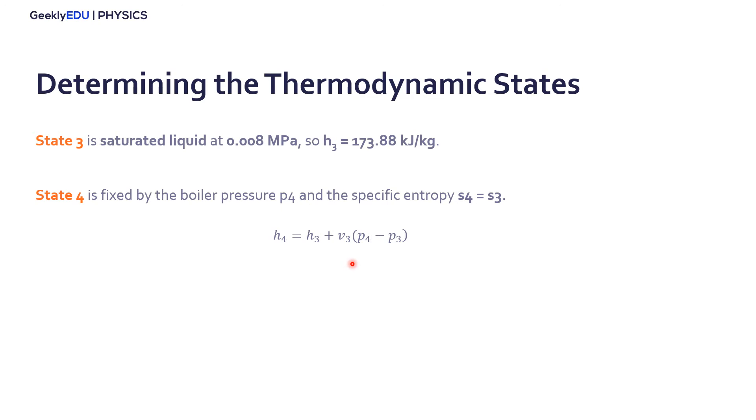Remember, for the pump, we can use the specific volume and difference in pressure. You can watch our previous video and take a look into this specific formula here. So from this, we have these values from the thermodynamic tables, the specific volume, and we can find the state four, the enthalpy for state four. Now we have all these states, the thermodynamic states determined, and we can move on.